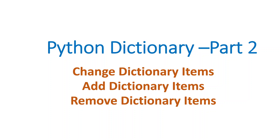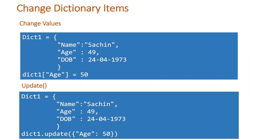Welcome to my channel. In this Python beginner tutorial series, today let's discuss Python dictionaries. This is part two of our Python dictionary video. In part one we discussed what a dictionary is, how to create a dictionary, and how to access dictionary items. Continuing that series, today let's discuss how to change, add, and remove dictionary items.